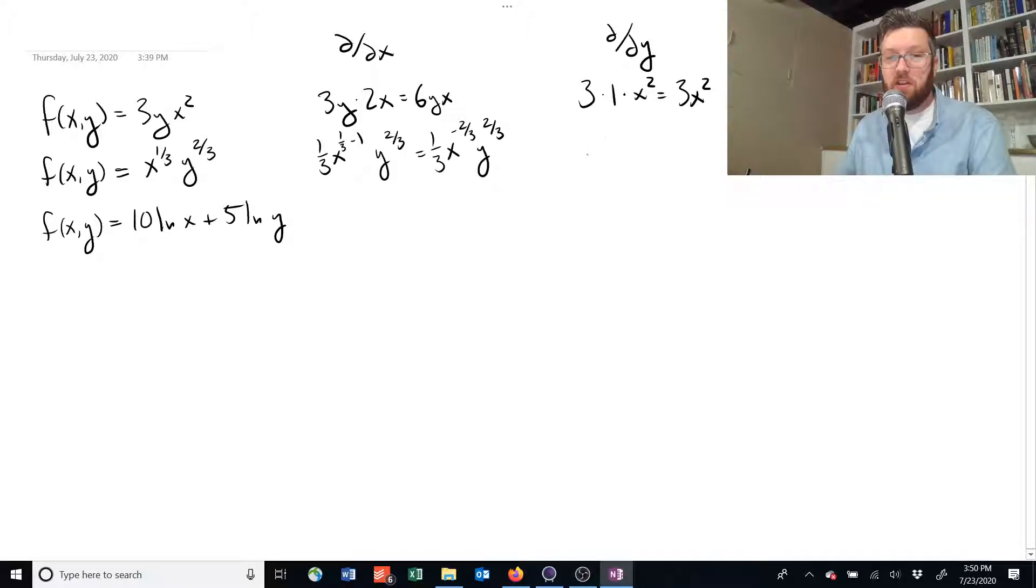What about over here? Well, we're going to leave x to the one-third alone and just rewrite it, treat it like a number. And then the derivative of y to the two-thirds is two-thirds y to the two-thirds minus one. We can rewrite this as two-thirds.